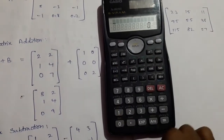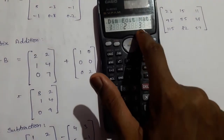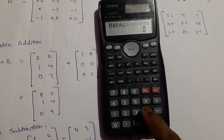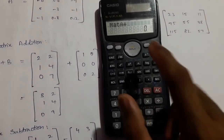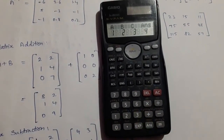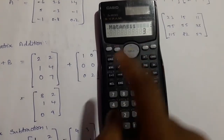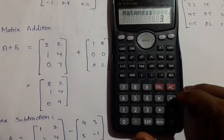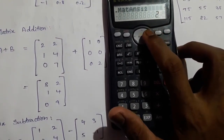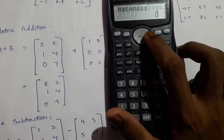Press the On button, then Shift, 4. Now press 3 for matrix A, then plus for matrix addition, then Shift, 4, press 3 for matrix B, and press equals. The elements are added. Press the navigation button for more elements. The results are: 3, 2, 1, 4, 0, 9.